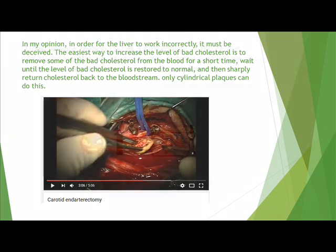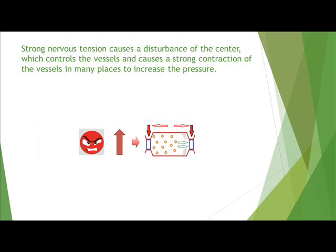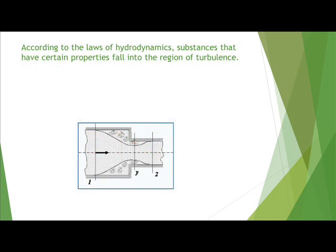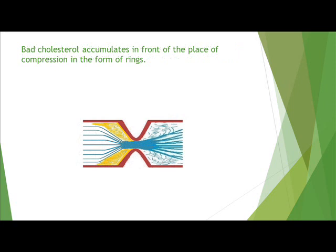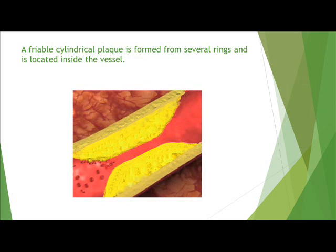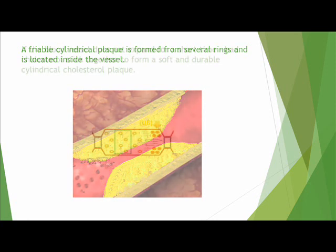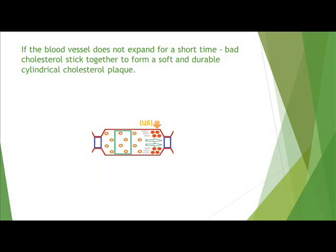Only cylindrical plaques can do this. Strong nervous tension causes a disturbance of the center which controls the vessels, leading to strong contraction of vessels in many places to increase pressure. According to the laws of hydrodynamics, substances with certain properties fall into regions of turbulence. Bad cholesterol accumulates in front of the compression site in the form of rings, and a friable cylindrical plaque is formed from several rings inside the vessel. If the vessel does not expand quickly, these rings stick together to form a soft and durable cylindrical cholesterol plaque.